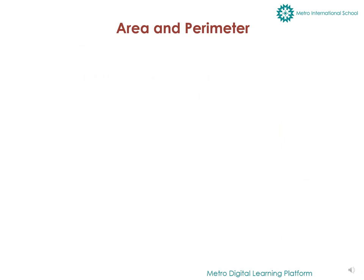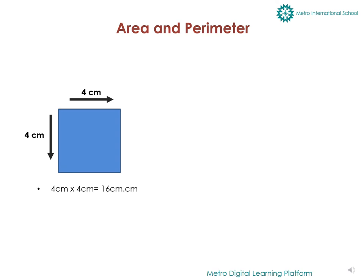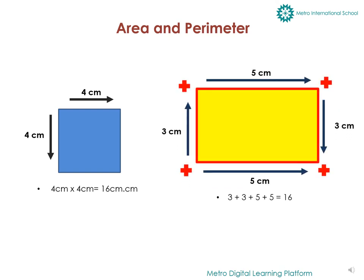Now let us have a quick revision of area and parameter. Area is the amount of space my shape is consuming, and parameter is the length around the outside of a shape.